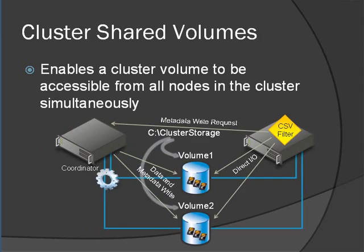The other thing we now have in R2 is Cluster Shared Volumes. NTFS is very much a shared-nothing file system — we can't have multiple nodes writing to an NTFS volume at the same time or the metadata gets corrupted. So in our Hyper-V environments we would have to create multiple separate areas on a SAN, one for every single virtual machine. If we had 20 virtual machines, we'd have to create 20 different LUNs.